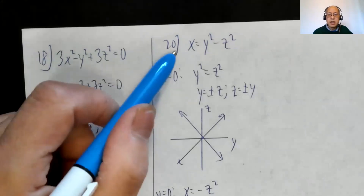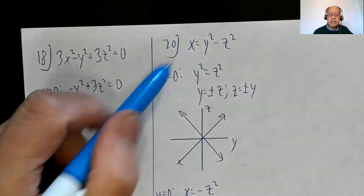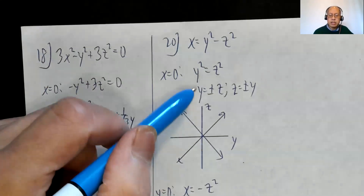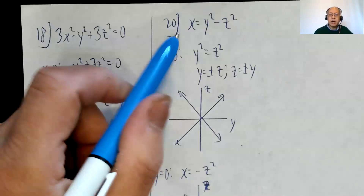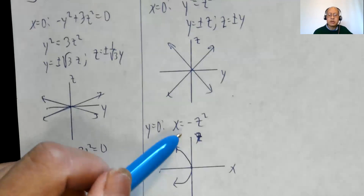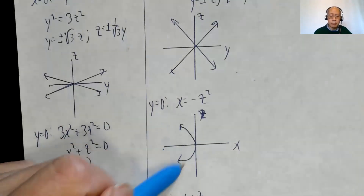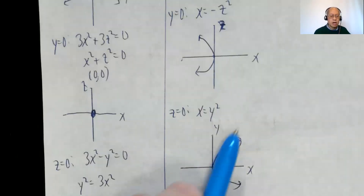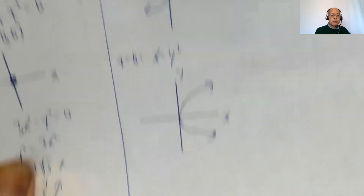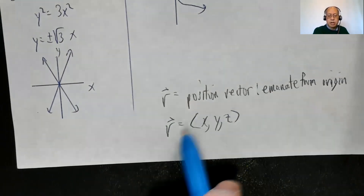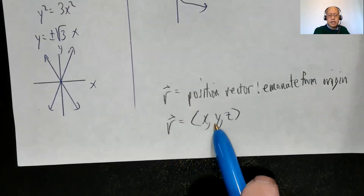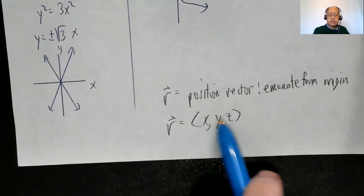Problem 20: X = Y² − Z². For the YZ plane (X = 0): Y² = Z², so Y = ±Z — lines with slopes of 1 and −1. For the XZ plane (Y = 0): X = −Z², a parabola opening to the left. For the XY plane (Z = 0): X = Y², a parabola opening to the right. R is a position vector that emanates from the origin, so R = ⟨X, Y, Z⟩ ends at the point (X, Y, Z).